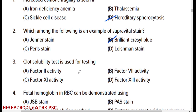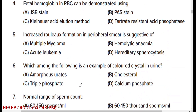Solubility test is used for testing option D: Factor 13 activity. Fetal hemoglobin in RBC can be demonstrated using option C — and the right answer is clear — the acid elution method.